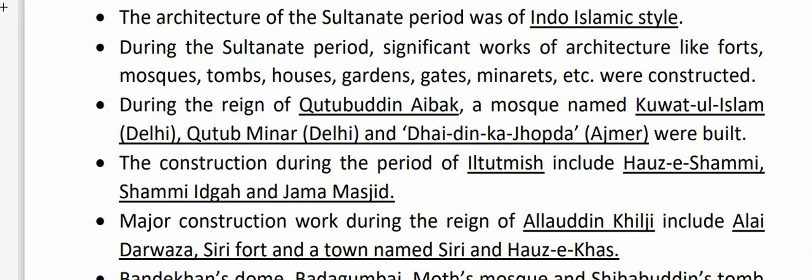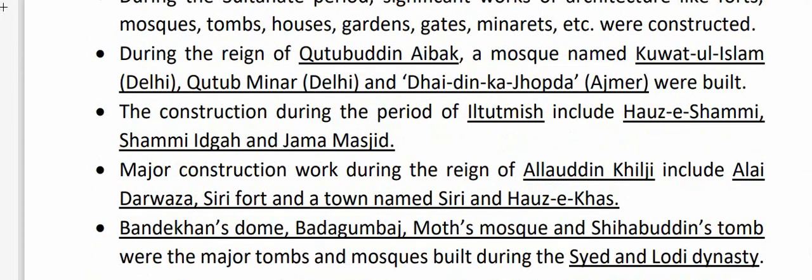During the reign of Qutb-ud-din, a mosque named Qutb-ul-Islam (Delhi), Qutb Minar (Delhi), and Dhai Din Ka Jhopra (Ajmer) were built. Constructions during the period of Iltutmish include Hauz-e-Shamsi, Shamsi Idgah, and Jama Masjid. Major construction work during the reign of Alauddin Khilji includes Alai Darwaza, Siri Fort, a town named Siri, and Hauz-i-Khas. Bandagi Khan's Dome, Bara Gumbad, Moth's Mosque, and Shia Buddhan's Tomb were the major tombs and mosques built during the Sayyid and Lodhi dynasty.